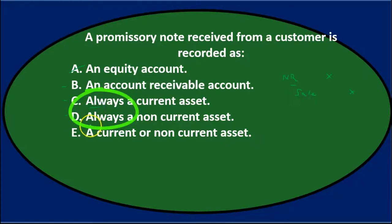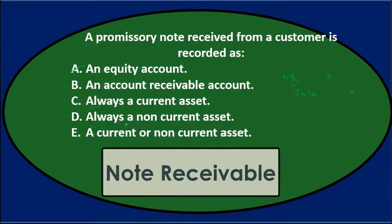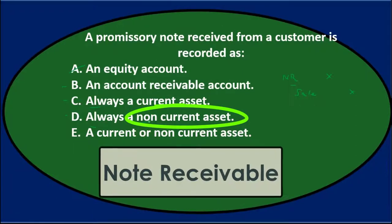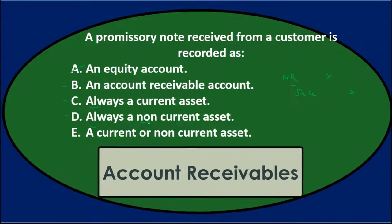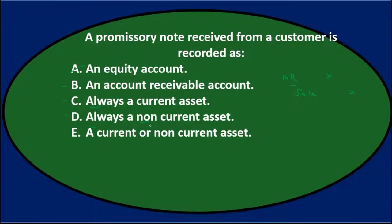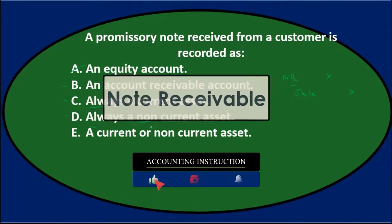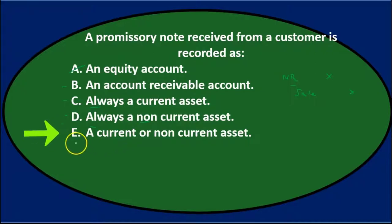Whenever a question says 'always,' we want to be careful — all we need is one exception to make it untrue. Most people might think the note receivable would always be non-current, because if it were current we might think it should go into accounts receivable. But the definition of a note receivable really isn't that it must be over a year — that's the definition of a non-current asset. A note receivable may not be due for more than a year, but it isn't necessarily so.